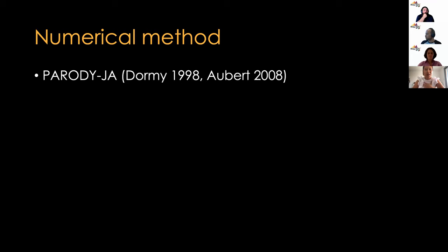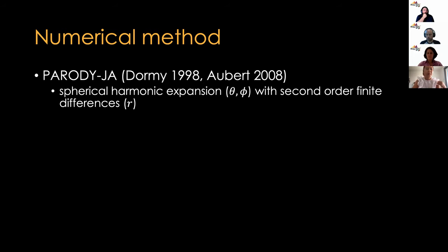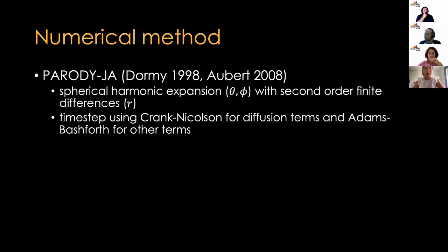So, in order to solve these equations and perform dynamo simulations, we're using a code called parody, which was originally written by Emmanuel Dormy and further developed by Julien Aubert. And this uses spherical harmonic expansions in the theta and phi directions, with a second-order finite difference method in the radial direction. And we have a decrease in the spacing in between the radial grid points towards the boundaries in order to try and capture more small-scale effects there. And we time-step through the code, using a Crank-Nicolson scheme for the diffusion terms and Adams-Bashforth for the other terms.